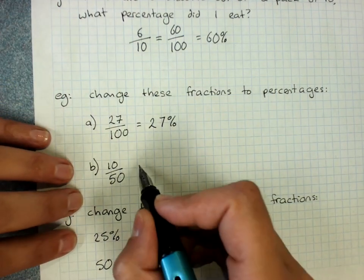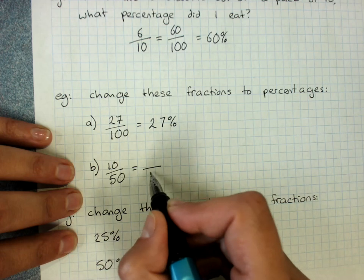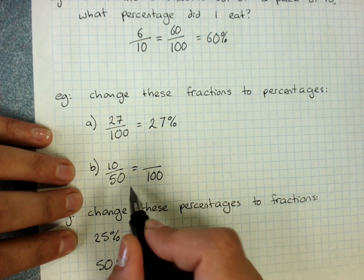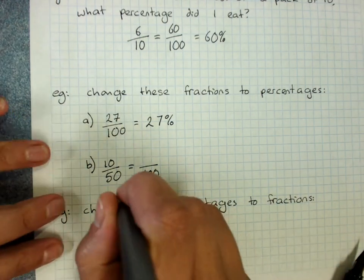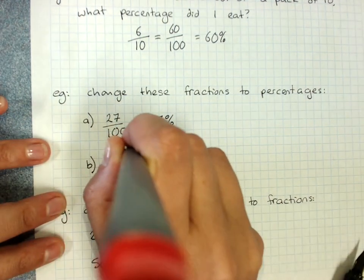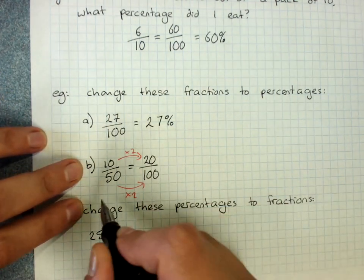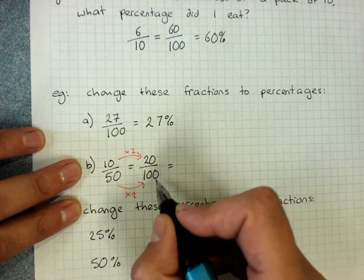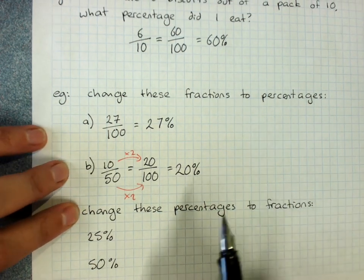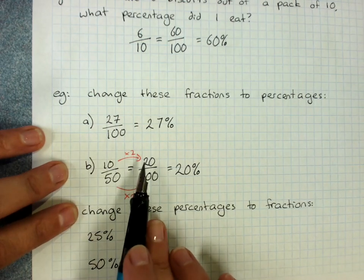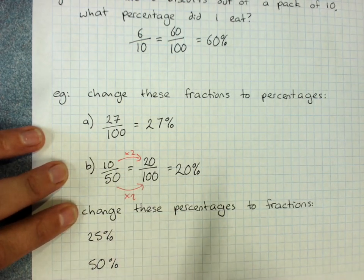Ten out of fifty — I need it to be out of a hundred. How do I get fifty to be a hundred? Times by two. So I'm doing the same thing here: ten out of fifty is the same as twenty out of a hundred. And now that it's out of a hundred, that's twenty percent. All that a percentage ever is, is writing a fraction as an equivalent fraction out of a hundred.